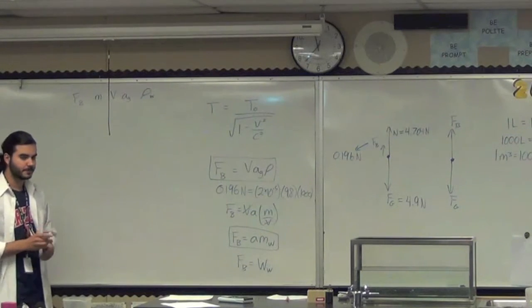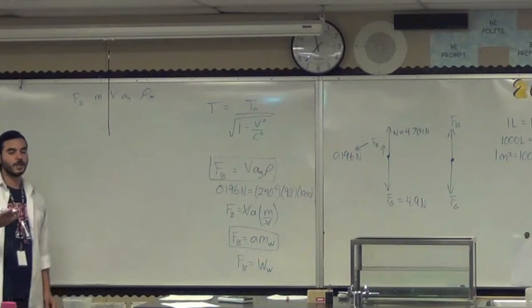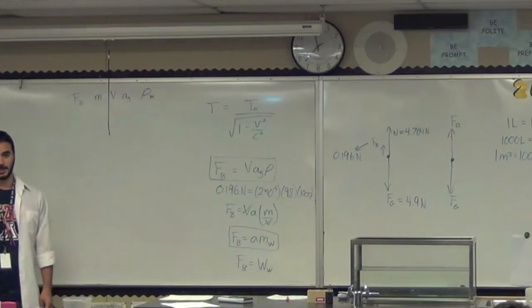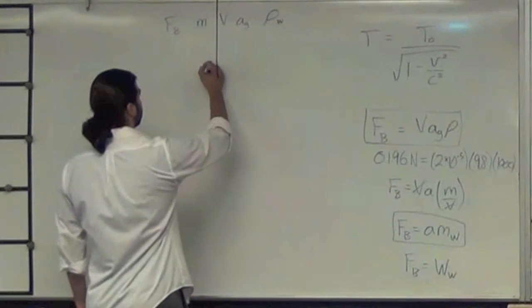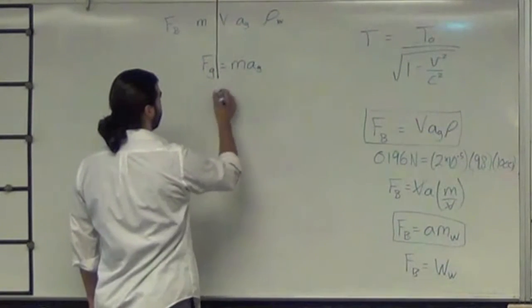So, what's the force due to gravity? On Earth, it's 9.8. What's the equation for the force due to gravity? Mass times that acceleration. So the force due to gravity is equal to mass times the acceleration due to gravity.